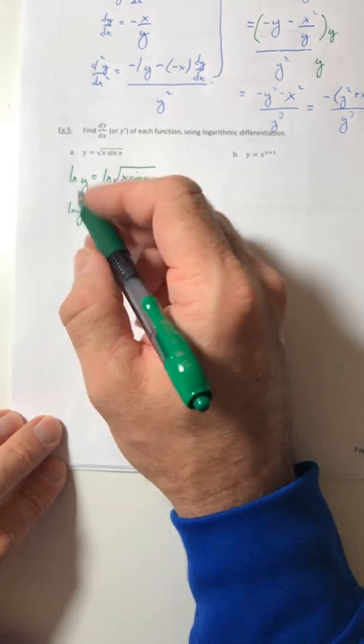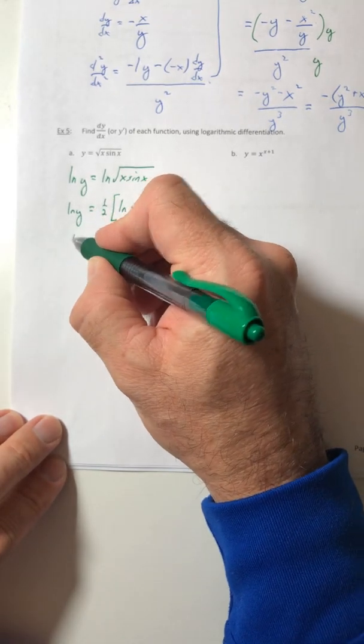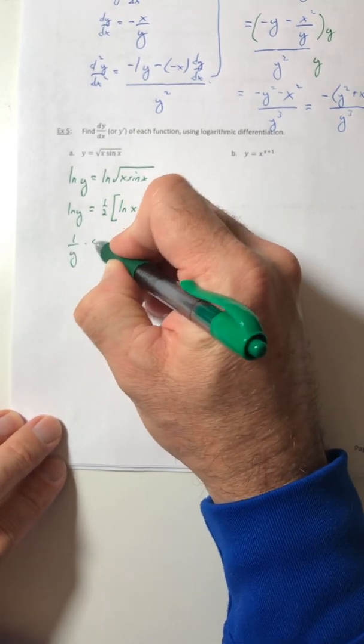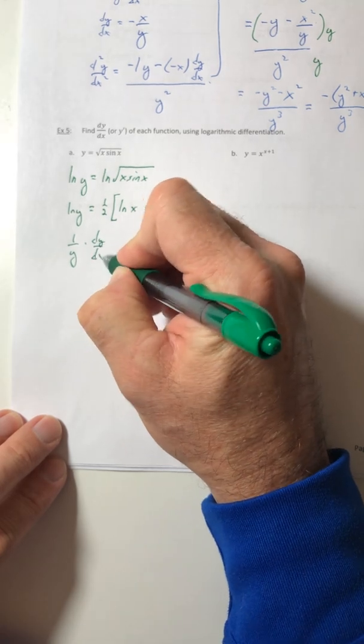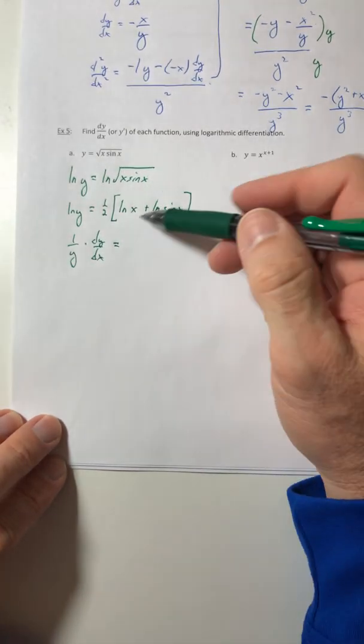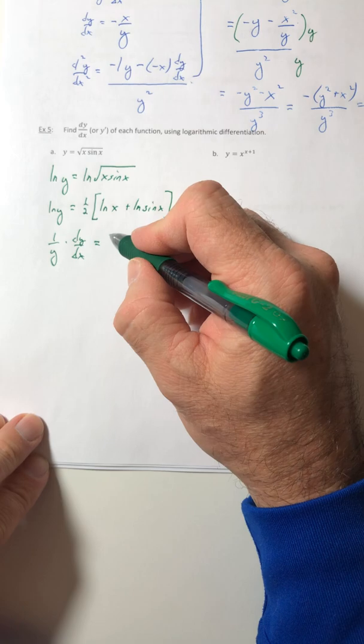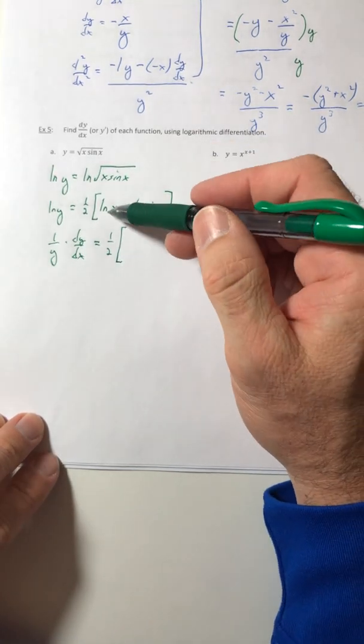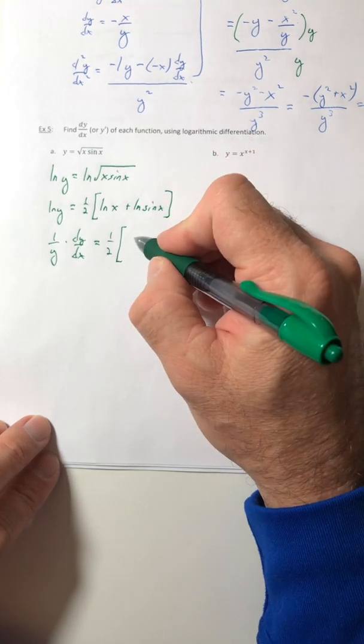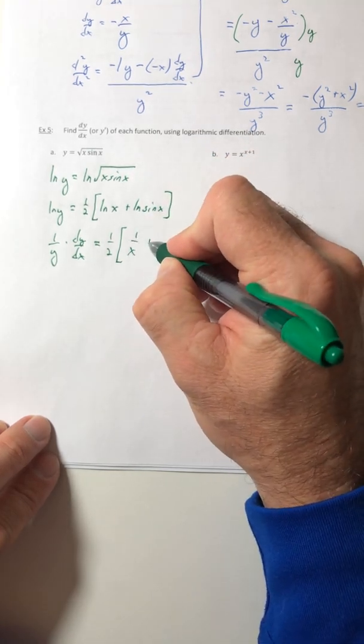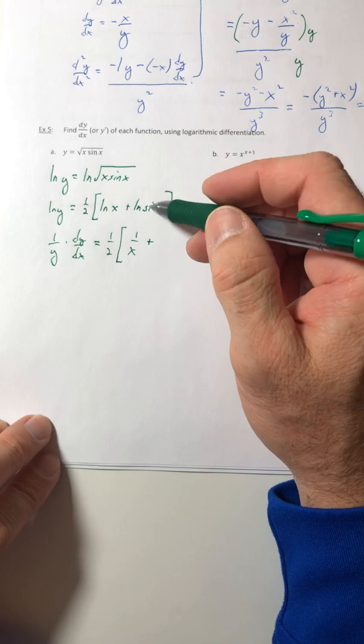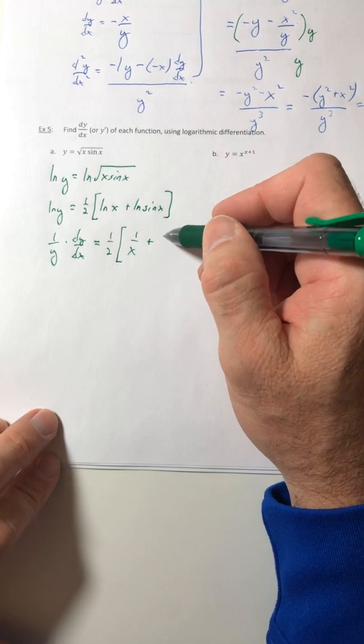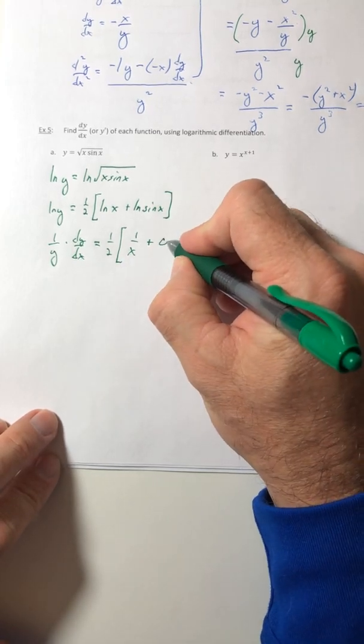So the derivative of ln of y is one over y times dy dx, which is equal to the one half stays, the derivative of ln of x is just one over x. The derivative of ln of sine x would be cosine over sine, which is cotangent.